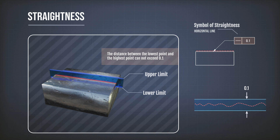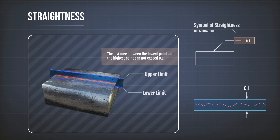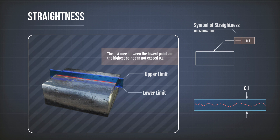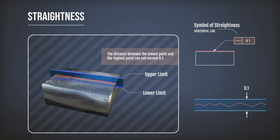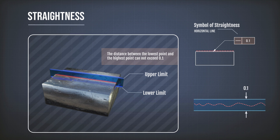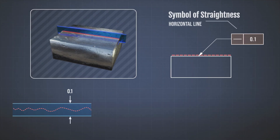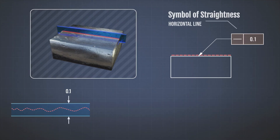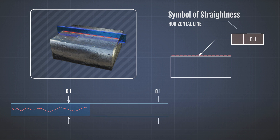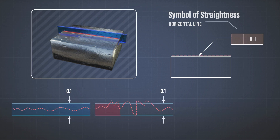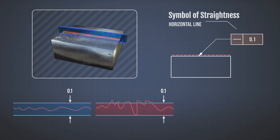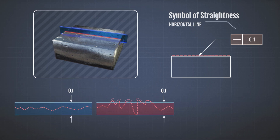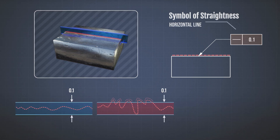You just start with the lowest point and draw the other line at a distance of 0.1, or whatever the value of the tolerance zone is. Any other point on the line has to fall between them. So if your line actually looked like this, then it's definitely out of tolerance — it's not acceptable, because we have these deviations right here.